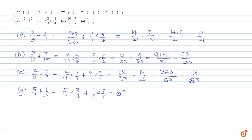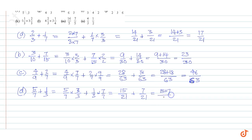15 plus 21 plus 7 by 21 is equal to 15 plus 7 plus 21, equal to 22 divided by 21.